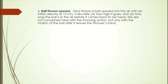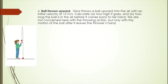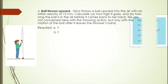Example 4: Ball thrown upward. Gina throws a ball upward into the air with an initial velocity of 15 meters per second. Calculate: A — how high it goes, and B — how long the ball is in the air before it comes back to her hand. We are not concerned with the throwing action, only with the motion after it leaves the thrower's hand. Given: G = 9.8 m/s² and initial velocity of 15 m/s. We calculate A — the vertical distance, and B — the time.